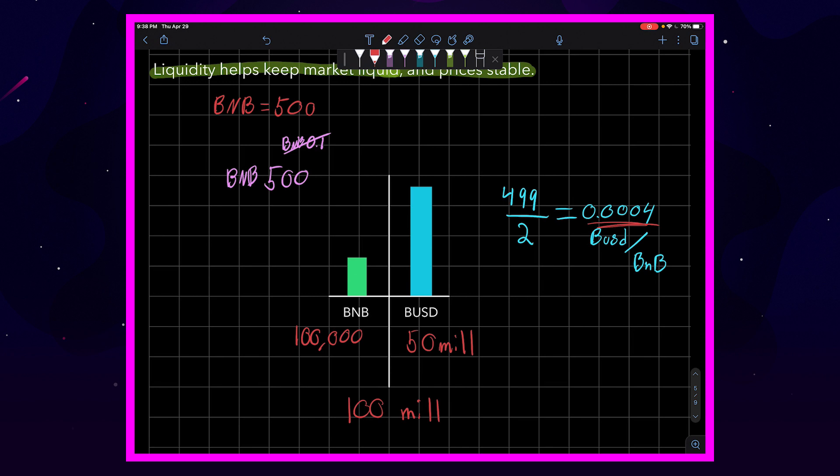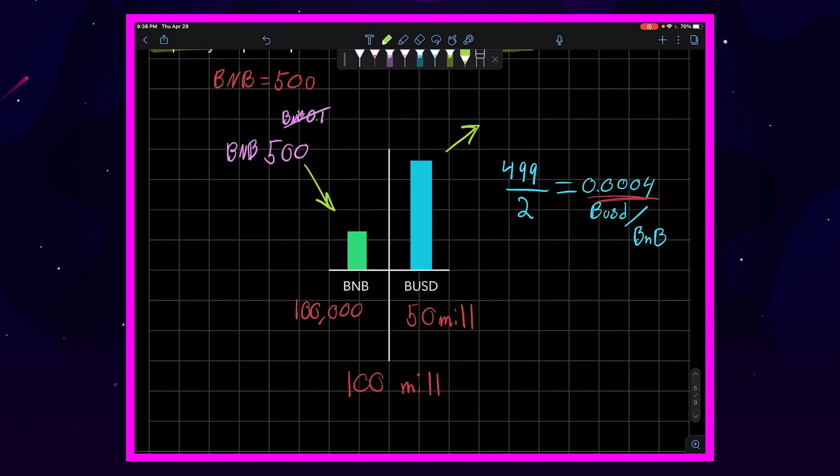Now, if we wanted to do this same equation again and put through our 500 BNB and take out the corresponding amount of BUSD, the new equation would look like this: 49.75 million over 100,500 BNB. If we do the math on that, it comes out to 495.02 BUSD per BNB.